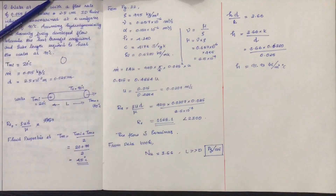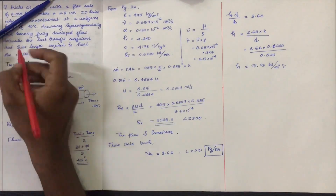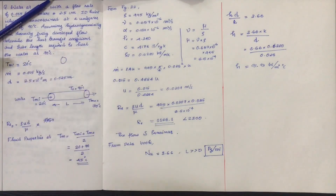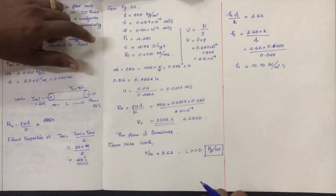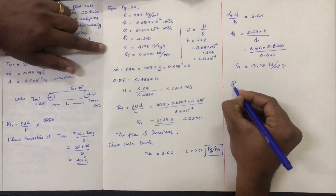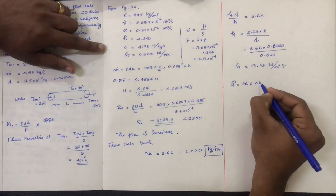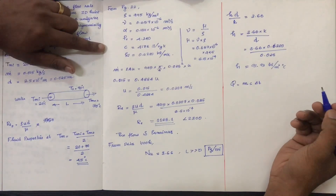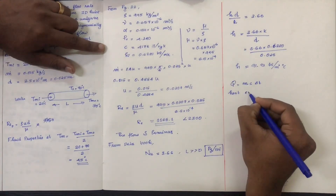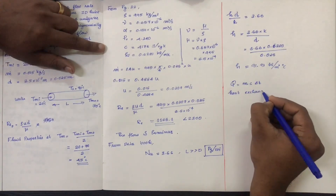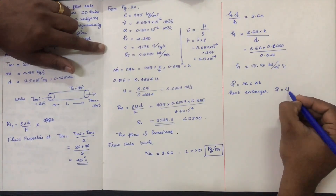Now we have to find the length of the tube required to heat the water. Using the heat exchanger equations, Q equals mass flow rate times Cp times delta T. In the heat exchanger case, Q also equals U times A times the log mean temperature difference.